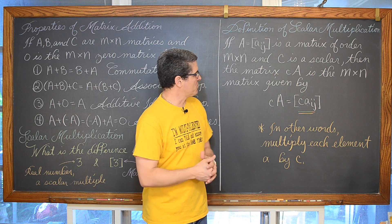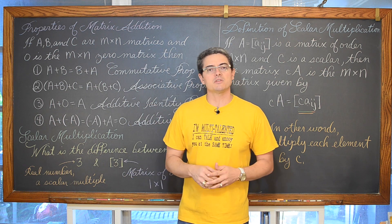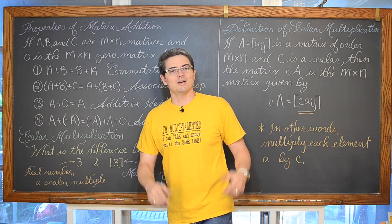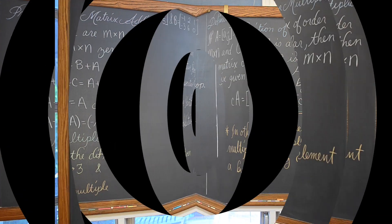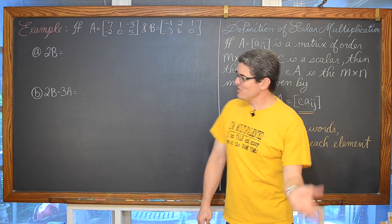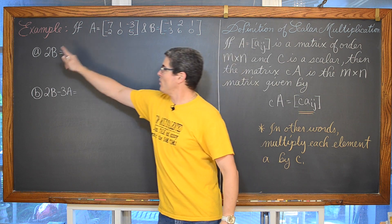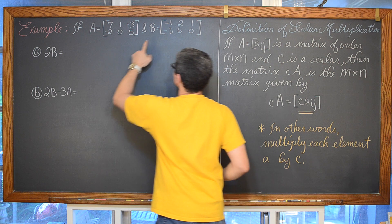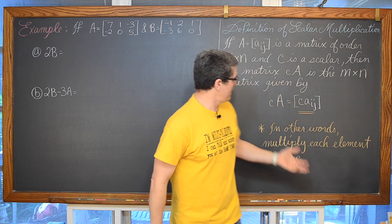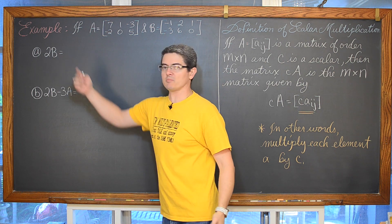So really this is fancy math language for multiply each element by C. So it won't be too difficult the work involved with the scalar multiplication. Just want to run through a couple of examples. We are going to have with these two matrices what is 2B. Can we apply the scalar multiple of 2 to matrix B? Well yeah, I can certainly multiply by 2.